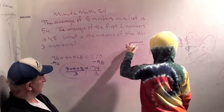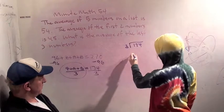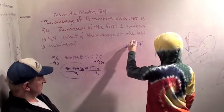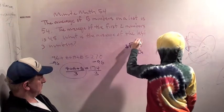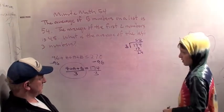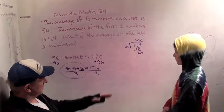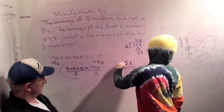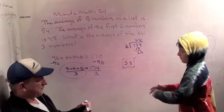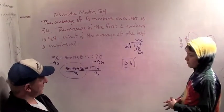3 goes into 174. 3 goes into 17. 3 times 5 is 15. 24. 3 times 58. So write your answer. 58. Good job.